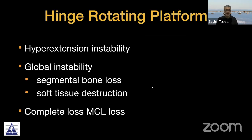We then come to the next degree of constraint: the hinge rotating platform. In today's world, there is not much role for a non-rotating hinge. We have to use a rotating hinge so that we can give patients better function, better stability, and less loosening. The major indications include hyperextension-type instability which may be neuropathic, complete loss of the MCL where there is no choice but to go to a rotating hinge, and global instability due to soft tissue destruction or segmental bone loss.